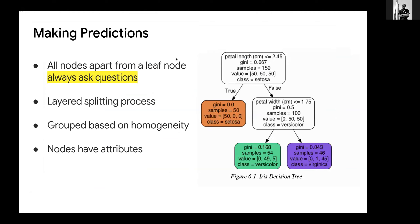Now, making predictions. All nodes, apart from a leaf node, always ask questions. A terminal node cannot ask any question. This node asks: if the petal width is less than or equal to 1.75 — if so, go this way; if not, go the other way. Decision trees use a layered splitting process and are grouped based on homogeneity. Nodes have attributes: samples, values, class, and Gini impurity.